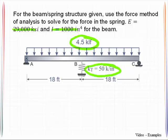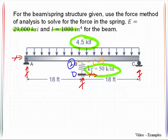First order of business is to identify the determinacy. I'm going to sketch in the reactions and identify point D at the base of the spring. When you think of translational springs, think of them just like truss members — there are two orthogonal reactions present there. We treat the point where the spring meets the beam as a hinge and make a cut there.